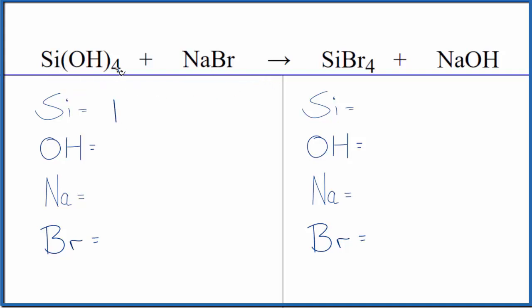We have 1 Si and then 4 of these hydroxides. So we're going to treat the hydroxide as just one thing. It's a polyatomic ion. We have it here and here, so we can just consider one thing. We have 1 times 4, so 4 hydroxides, 1 sodium, 1 bromide.